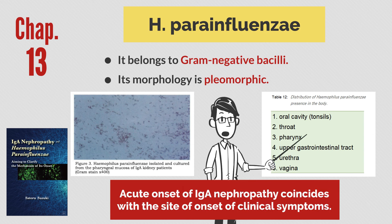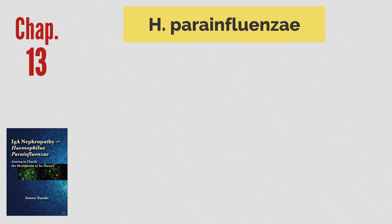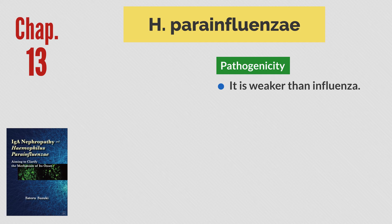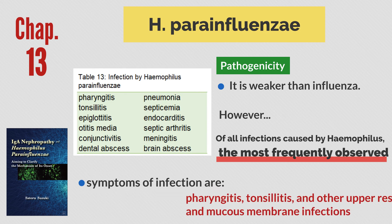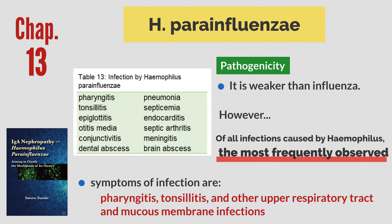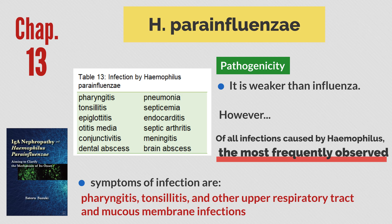It is important that these sites coincide with the site of clinical manifestation of acute onset of IgA nephropathy. H. para-influenzae is less pathogenic than H. influenzae, but is the most common Haemophilius infection. The main symptoms of H. para-influenzae infection are pharyngitis, tonsillitis, and other upper respiratory and mucosal symptoms.